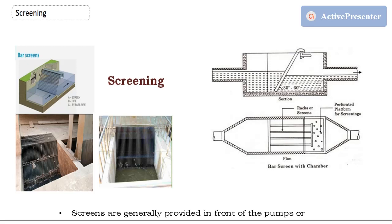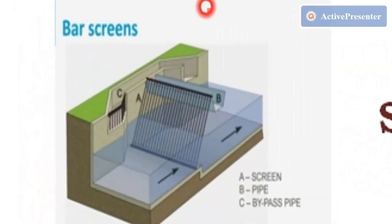In the treatment plant, before the water comes in, it will be carrying some large materials like stones, debris, bushes, leaves, trees, dead animals, and so on. Those you need to remove. This is not called filtration — you are not filtering, you are just removing them. Therefore, we need screens.